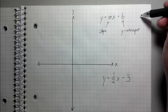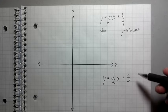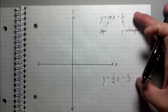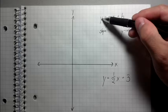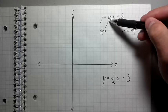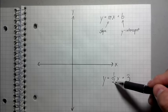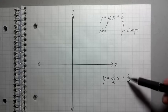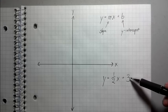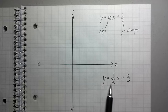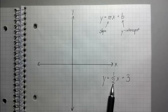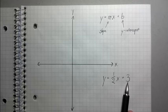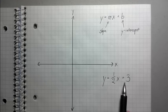Looking at slope-intercept form and looking at this equation, do you see how there's kind of a correspondence between these two equations? So y is y, m is one-half, x is x, and b is positive 3. Using that information, we can use the numbers we see here — one-half, which is the slope (m), and 3, which is the y-intercept (b) — to help us draw a picture of this line.